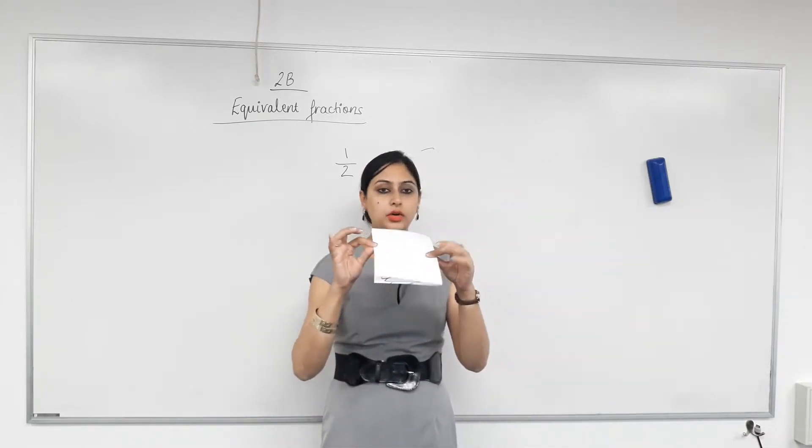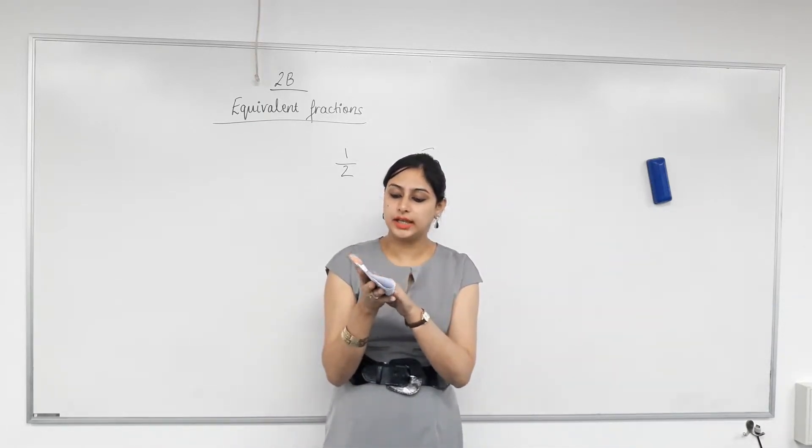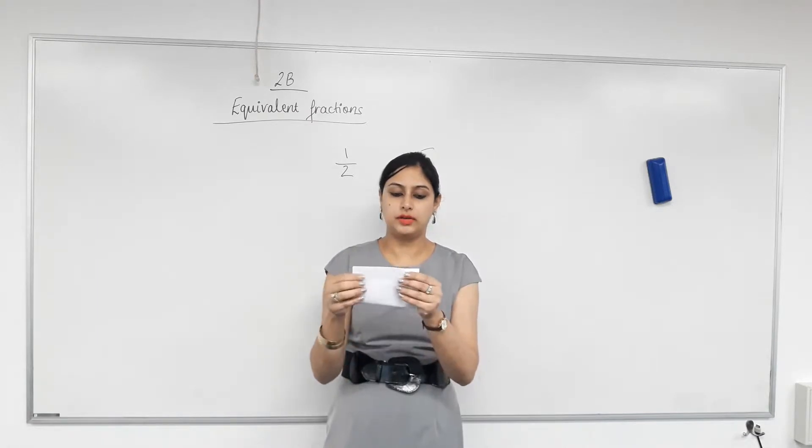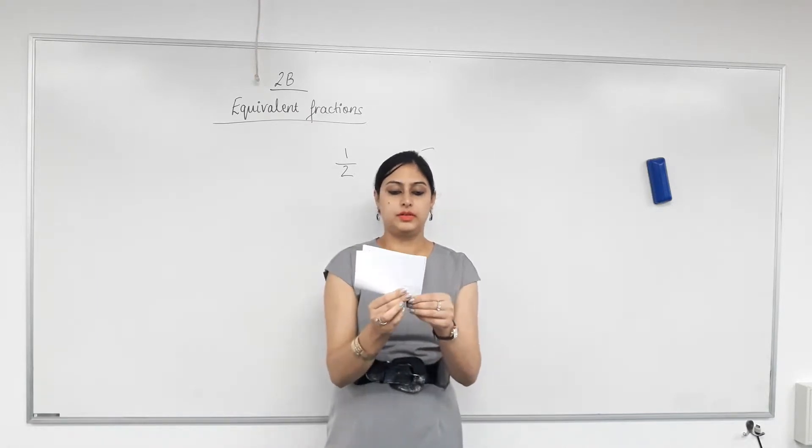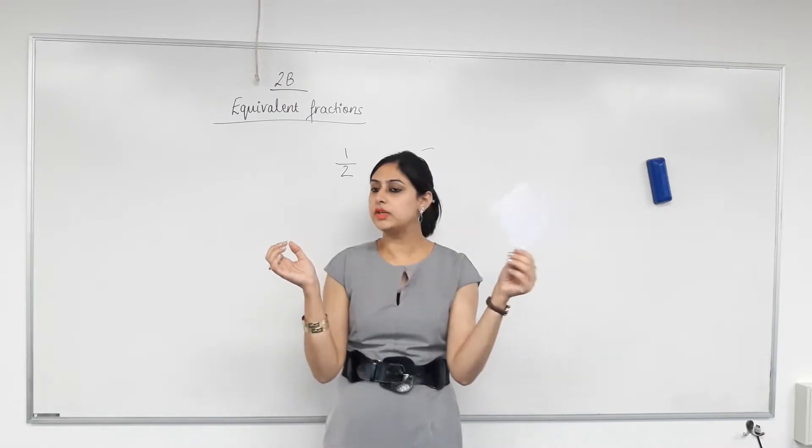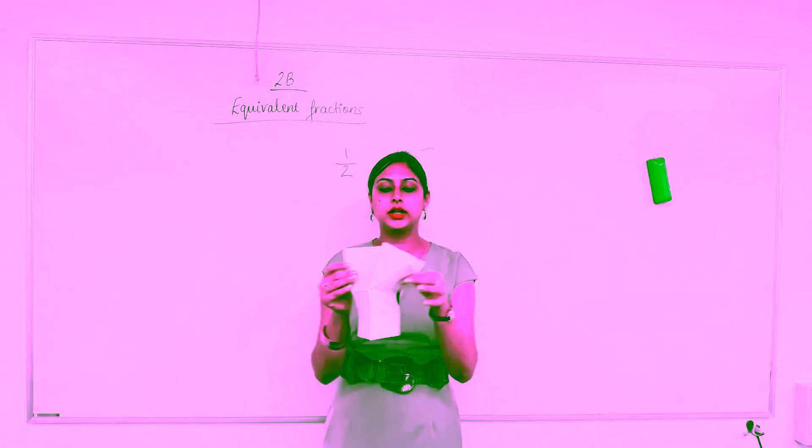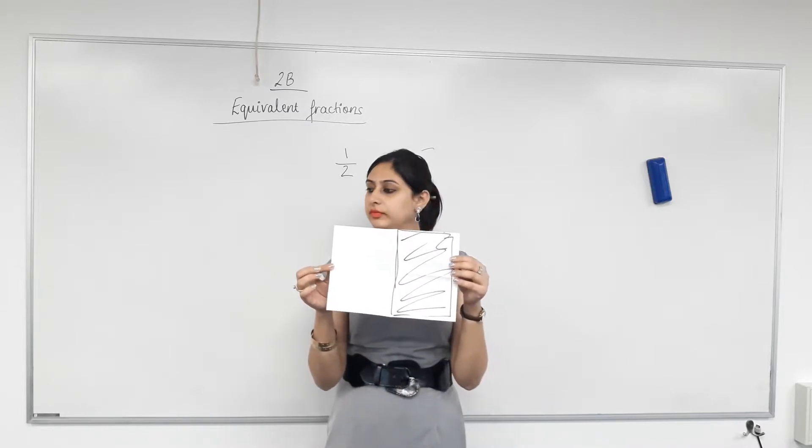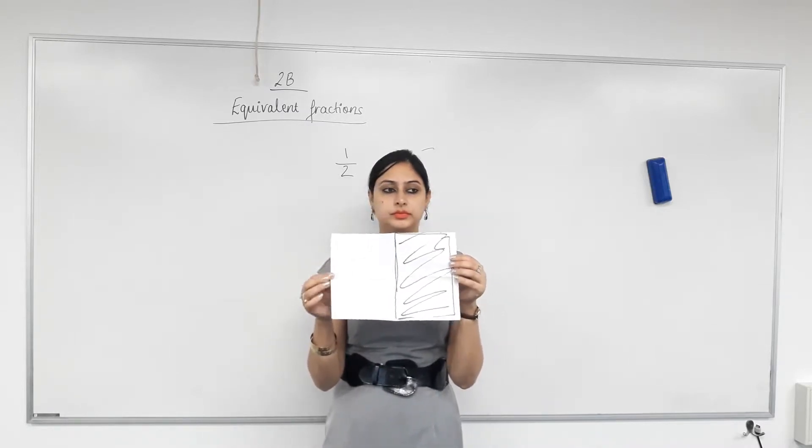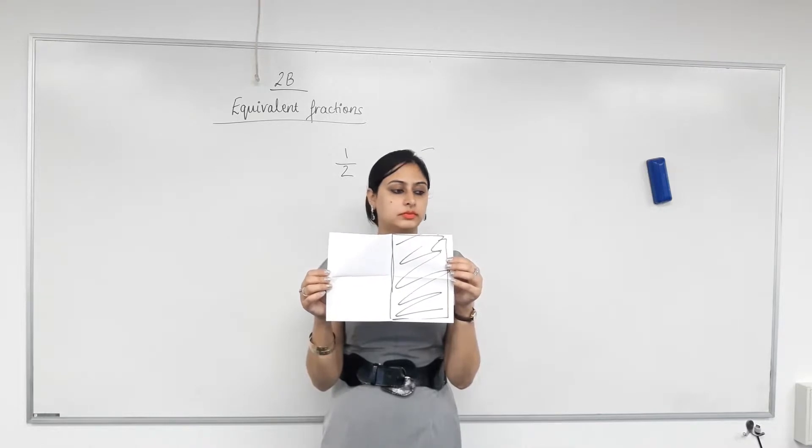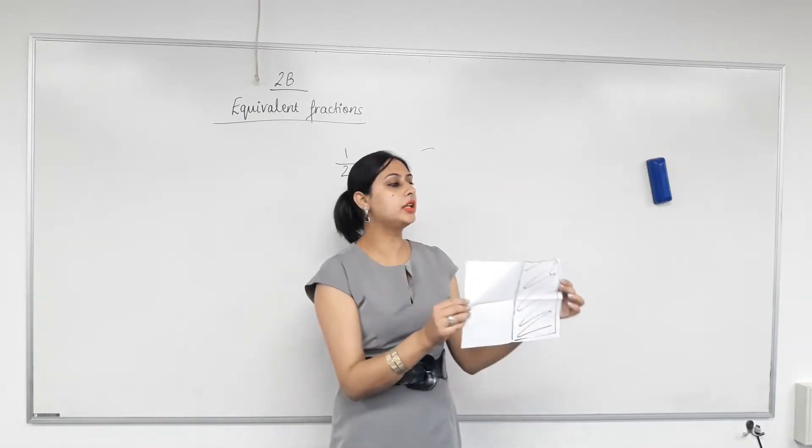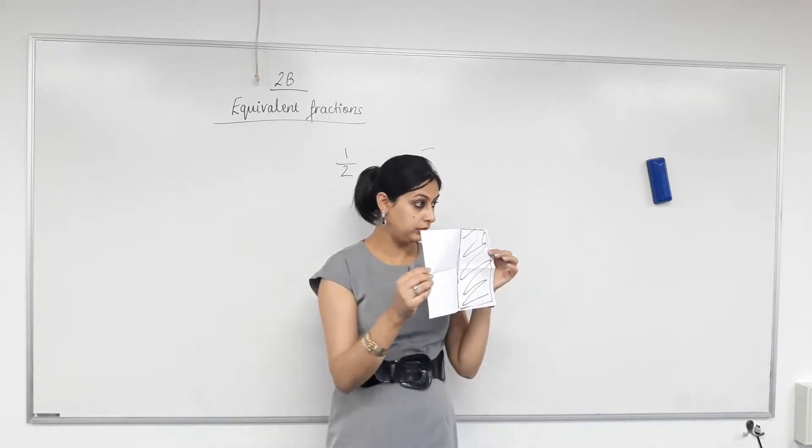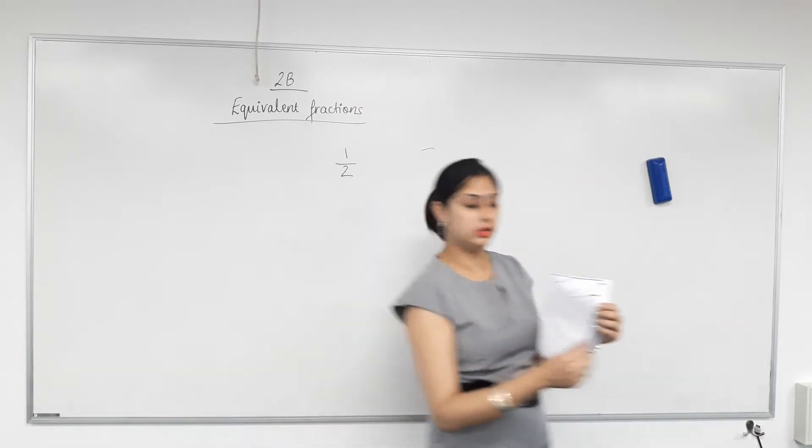Whatever is left now, you have to fold it again into half. Once you've done that, you undo it again. Now, how many equal parts can you see? Four. Do we all agree? Yes.